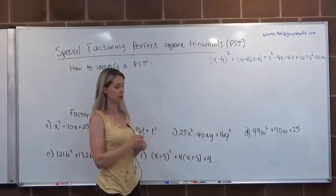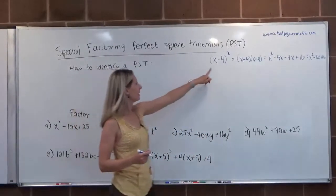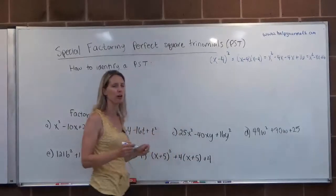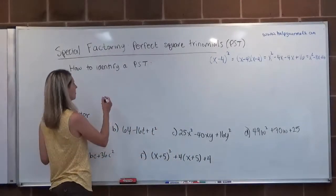We have two types of perfect square trinomials. One we see here when we have subtraction, I'm actually going to do that one second. The first one is when we have addition.